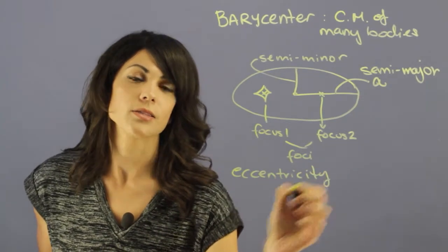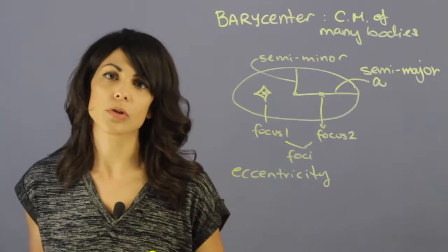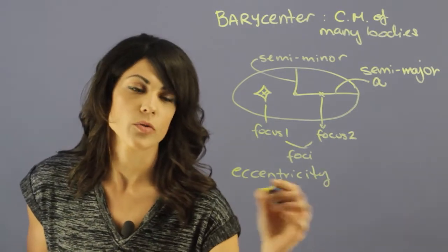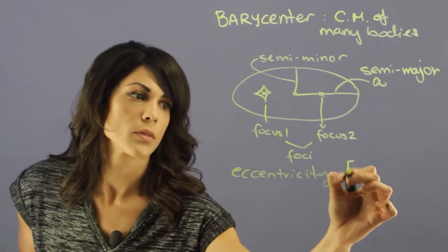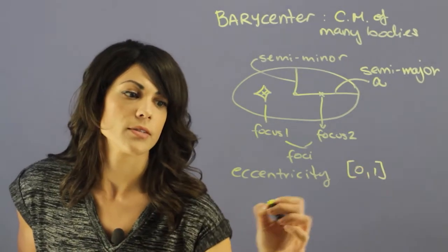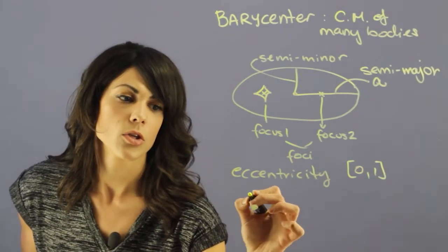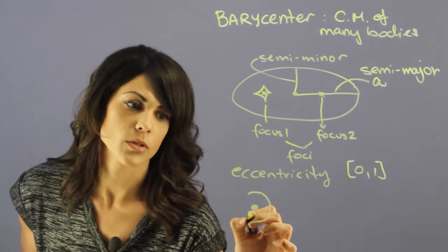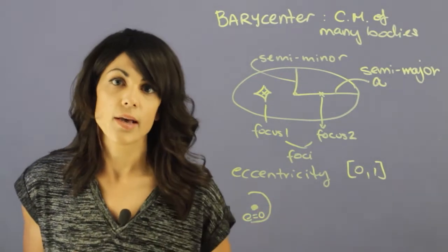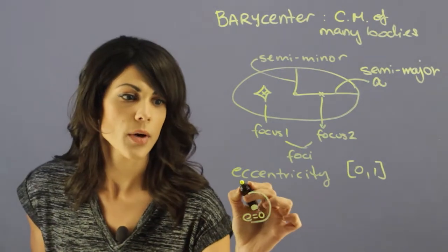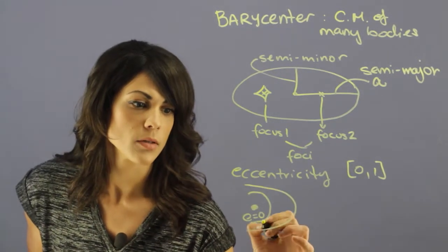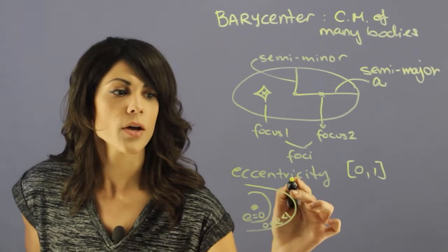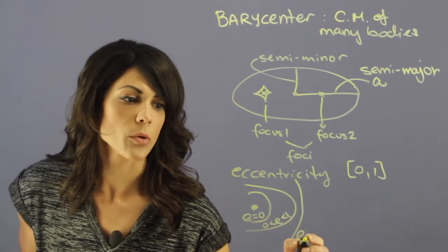Eccentricity is how circular or how elliptical an orbit is, and it goes from zero to one. If it's zero, you have a circular orbit. If it's between zero and one, you have an elliptical orbit. And if you have one, you have sort of a parabolic orbit.